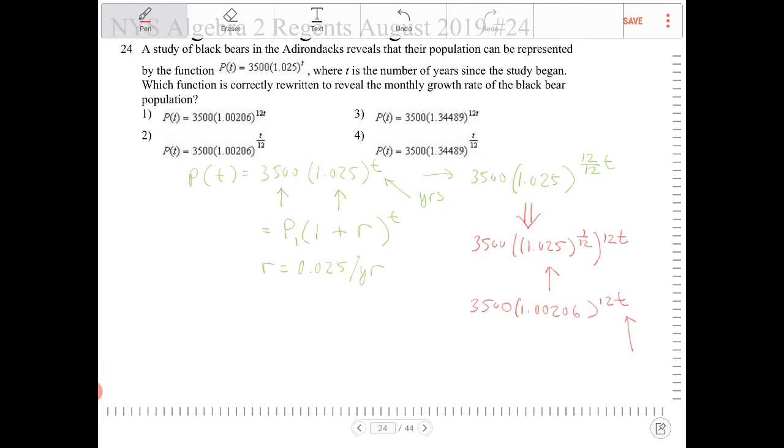So looking at this, this is our equation for how the black bears are changing from month to month. And which answer best matches this? That would be option one.